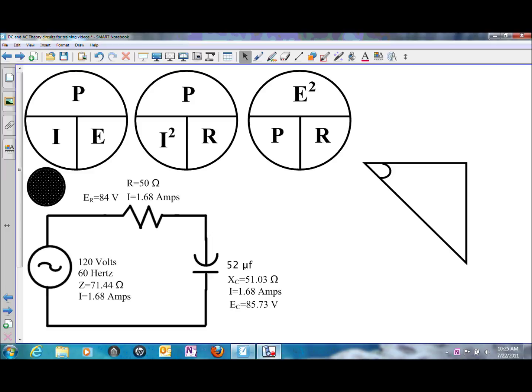We can use any one of the three power calculation formulas to figure out power at any individual component. If we wanted the total power, we could use total current and total voltage, I times E, and get the volt amps for the apparent power.